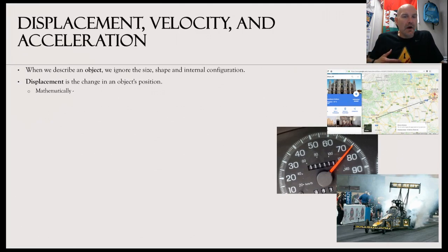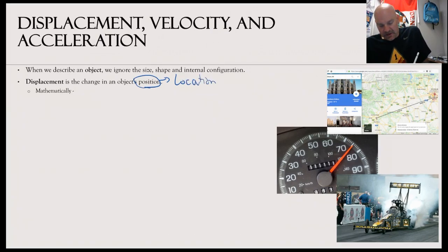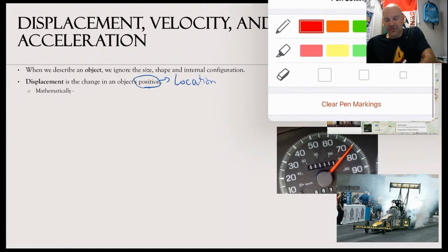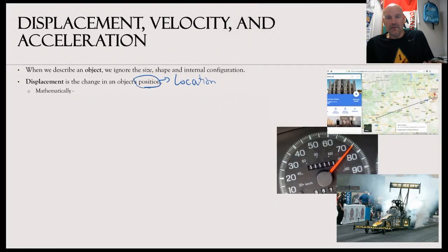Now, displacement is the change in an object's position. Position is just simply a location, and that location is based on an origin, like a number line for math. Displacement is when you change your number line location. So if I go from 0 to 5, I've displaced myself from the origin to a position of 5. That means my displacement is 5 units. Mathematically, displacement is delta x equals x minus x0.